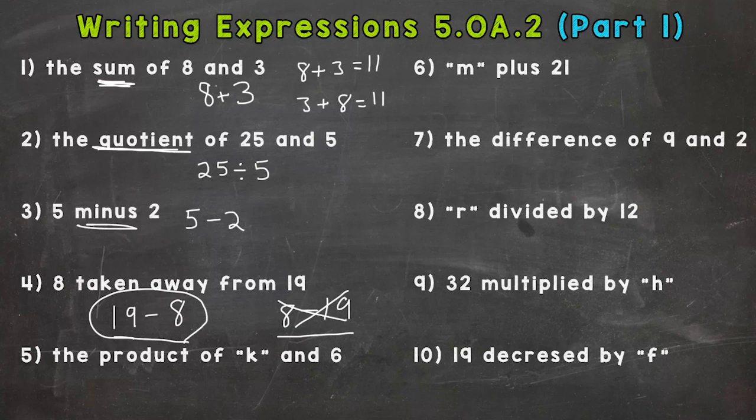So let's go down to number five: the product of k and 6. Know that is not a mistake—we are supposed to have a letter in our math problem there. So we have a k and a 6. I'm going to explain a little bit about what a letter means in a math problem.